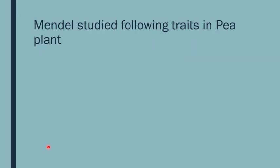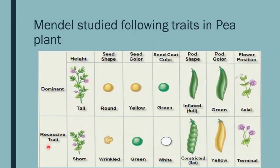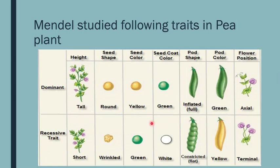Mendel studied seven different traits in the pea plant. Some traits were dominant, expressing themselves in the first generation; some were recessive. First character: height — tallness was dominant, shortness was recessive. Second: seed shape — round shape was dominant, wrinkled was recessive. Third: seed color — yellow was dominant, green was recessive.